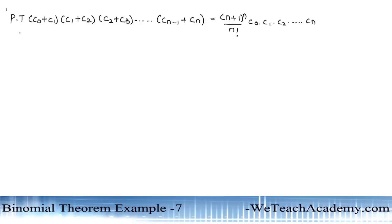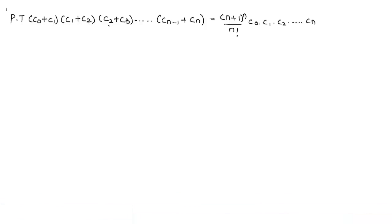We have to prove that (c0 + c1)(c1 + c2)(c2 + c3)...(cn-1 + cn) is equal to (n+1)^n divided by n factorial, into c0 into c1 into c2 ... cn.